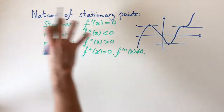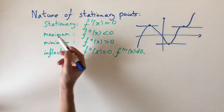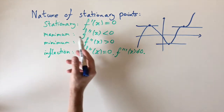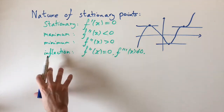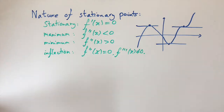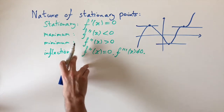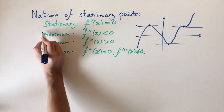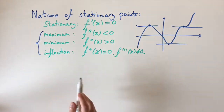By the nature of these turning points, we can either have a maximum, a minimum, or a point of inflection. We also have some conditions for these. So these are the three cases we're going to be looking at.